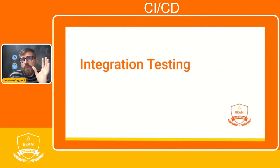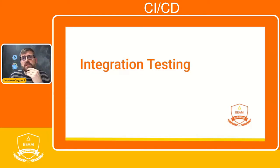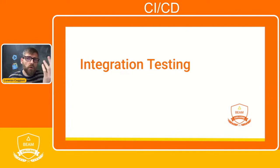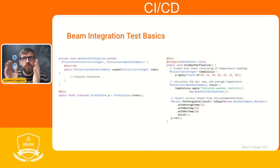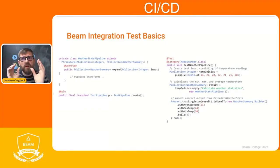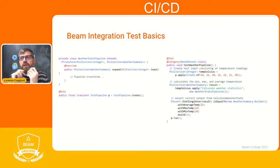Now that we have our pipeline's building blocks tested and working as expected, we can move to the next step: checking if our entire pipeline is working as expected. These are the integration tests, also known as pipeline unit tests. For integration testing we are testing the entire pipeline except for the source and the sink. Let's assume we have a pipeline that, given a collection of integers, calculates weather stats — min, max, average. We create a set of example data, run the pipeline using the sample data, and conclude by asserting the output with the expected results.